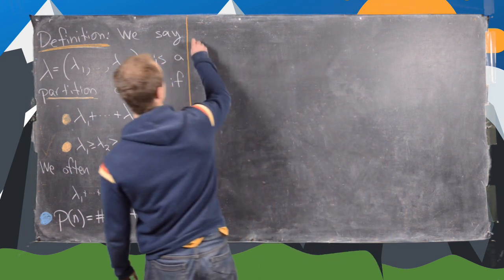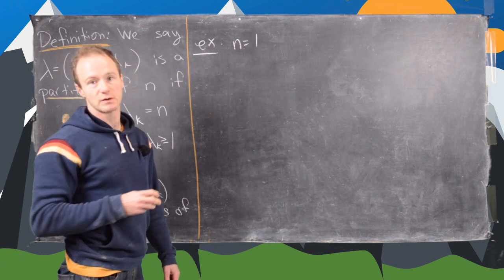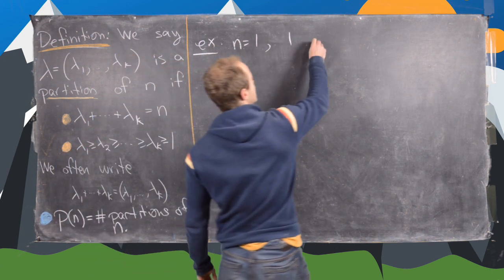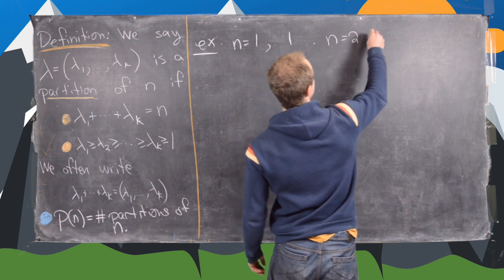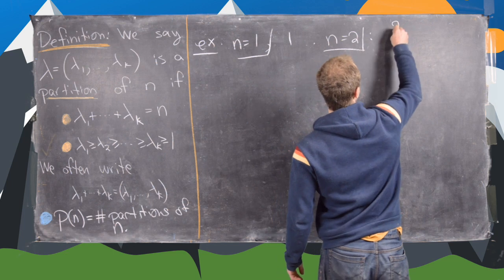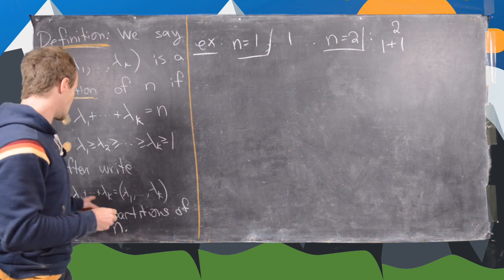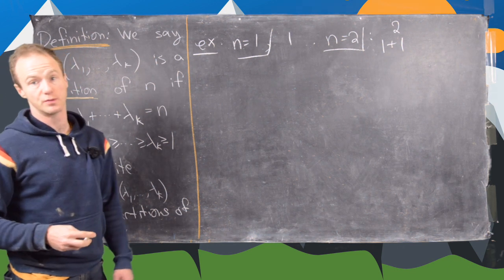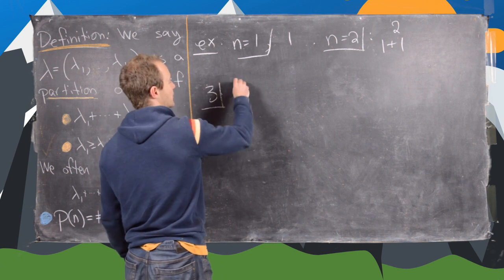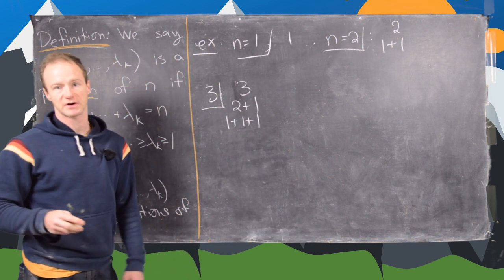Let's look at some examples. Starting small: for n equals 1, there's just one partition, which is 1. For n equals 2, there are two partitions: 2, and 1 plus 1. That's what I mean by writing it as the unsimplified addition problem instead of a tuple. For n equals 3, we have 3, 2 plus 1, and 1 plus 1 plus 1.